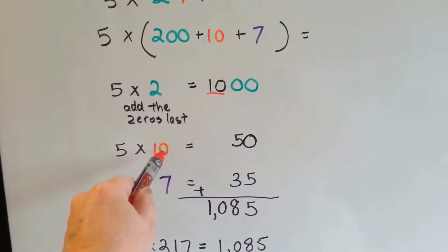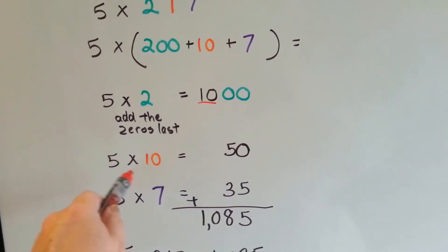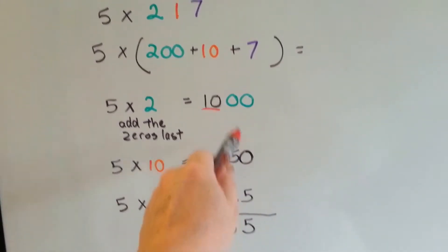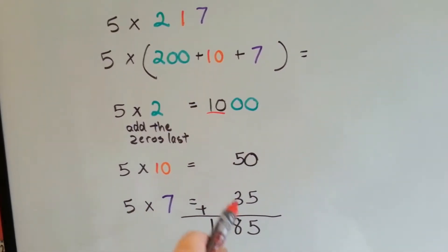5 times 10, we could have done 5 times 1 and add the zero, but the tens are not that hard. 5 times 10 is 50, so we got the 10. Now I need to do the 7. 5 times 7 is 35.